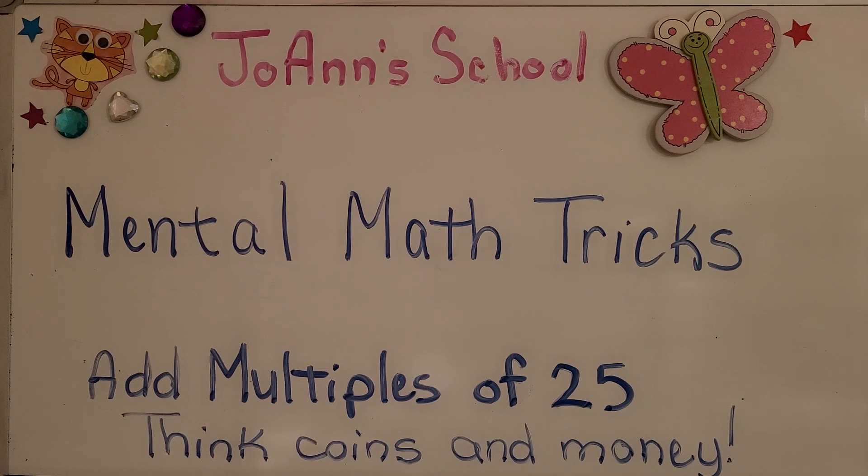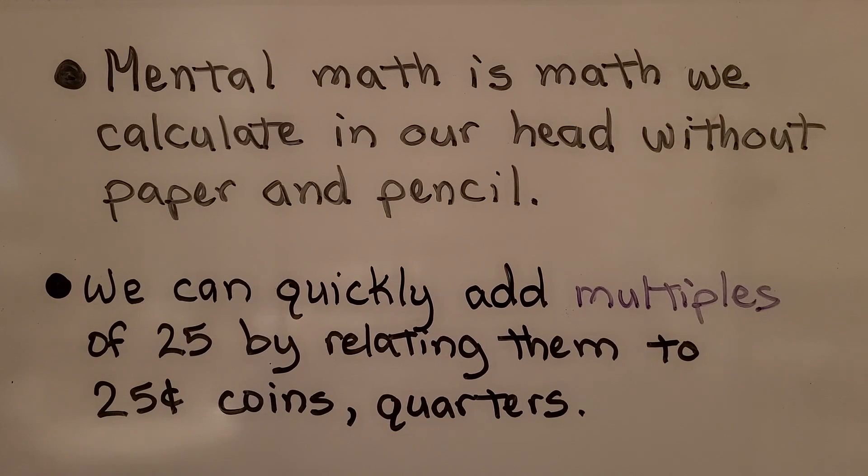Mental math tricks. Add multiples of 25, we're going to think coins and money. Mental math is math we calculate in our head without paper and pencil. We can quickly add multiples of 25 by relating them to 25 cent coins, quarters.